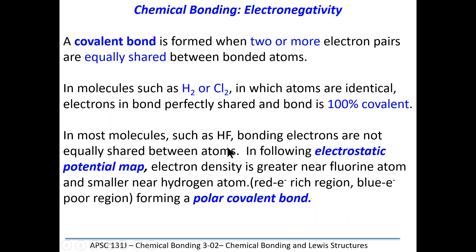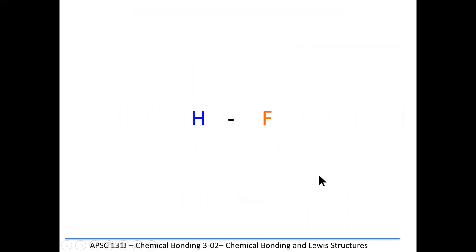But in most instances, the bonds are formed between different atoms, and you can see the way that the electron pair is being shared by looking at an electrostatic potential map, where the electron densities are shown by different colors. We call that type of bond, where the electrons are not being shared equally, a polar covalent bond. Where the electrons spend more time is negative. Where they spend less time is going to be positive.